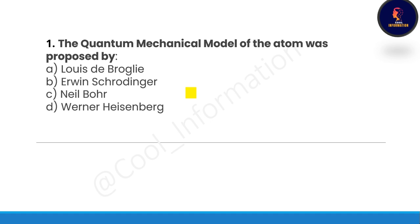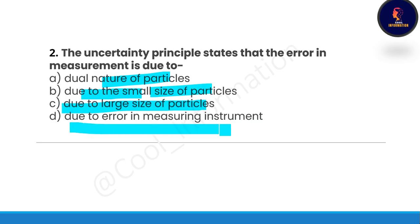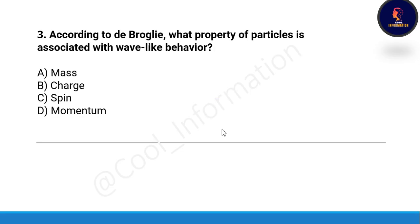First question: the quantum mechanical model of the atom was proposed by — option A: Louis de Broglie, option B: Erwin Schrödinger, option C: Niels Bohr, option D: Werner Heisenberg. Correct option is B, Erwin Schrödinger. Next question: the uncertainty principle states that the error in measurement is due to — option A: dual nature of properties, option B: the small size of particles, option C: the large size of particles, option D: error in the measuring instrument. Correct option is B, due to the small size of particles.